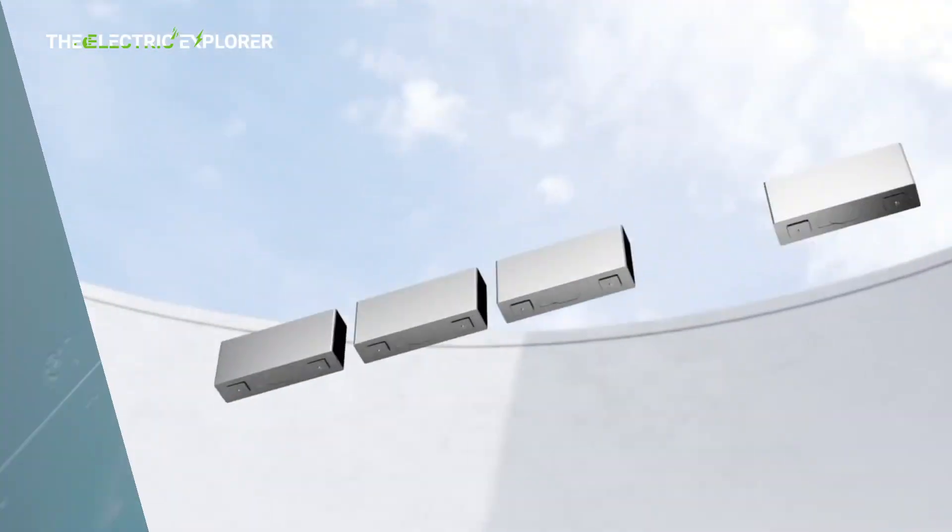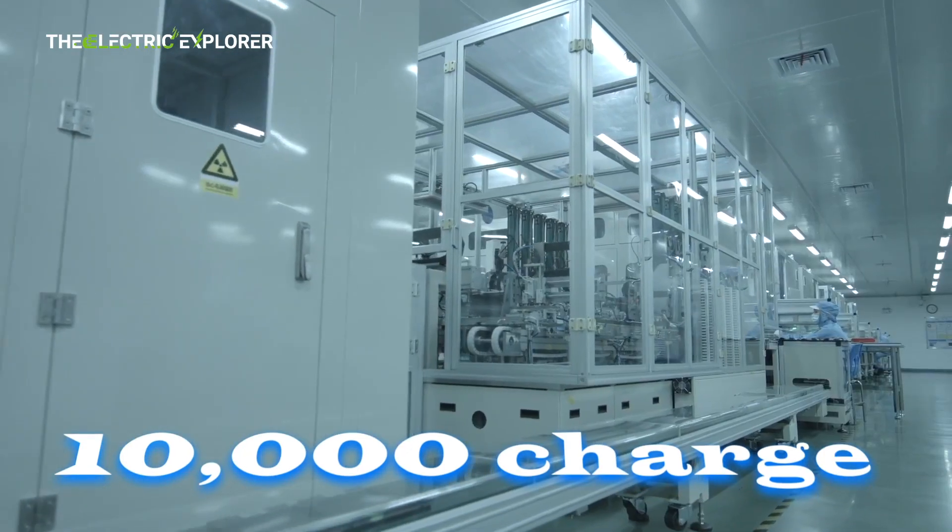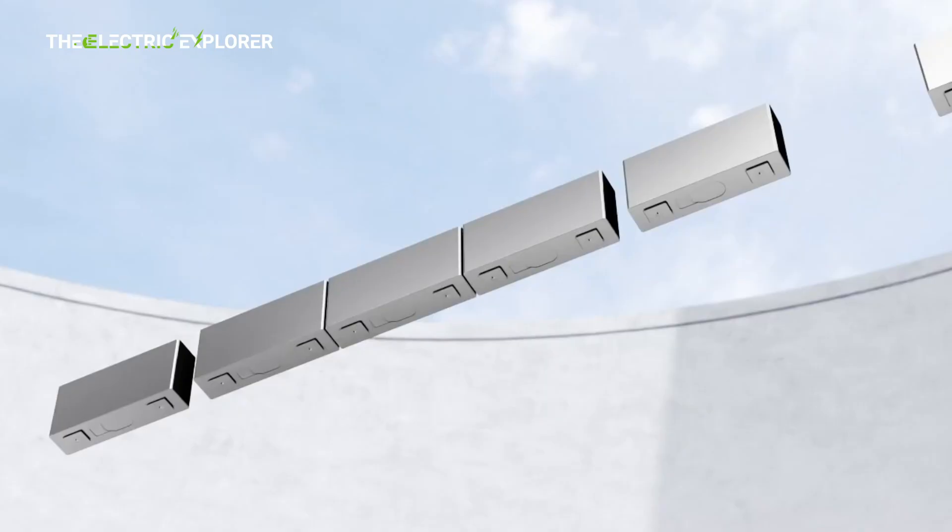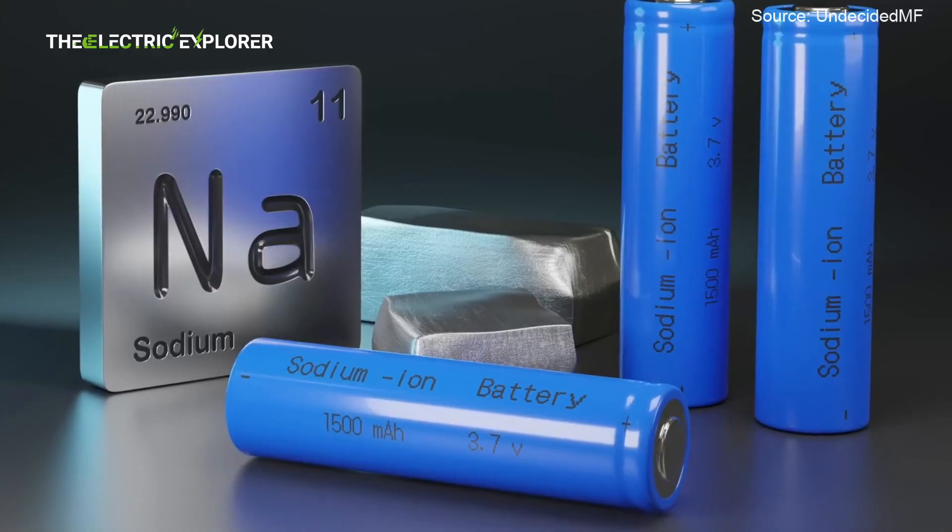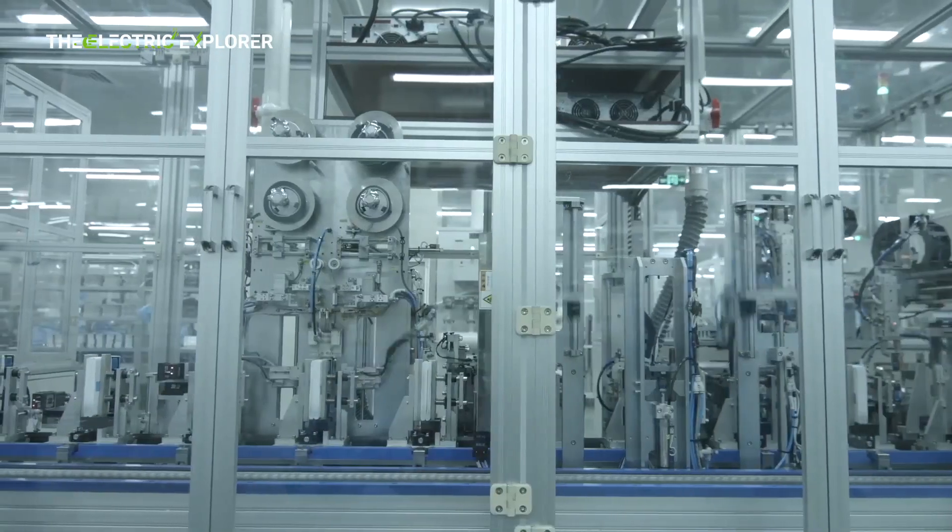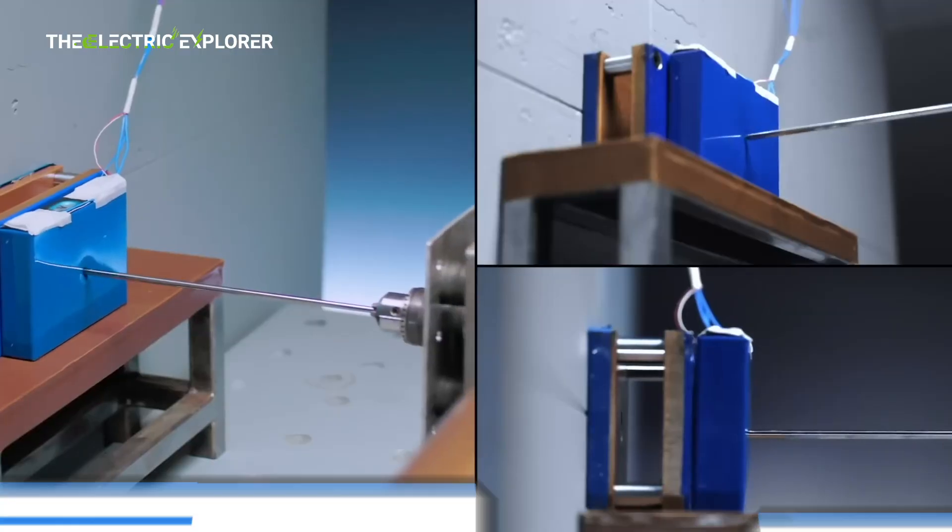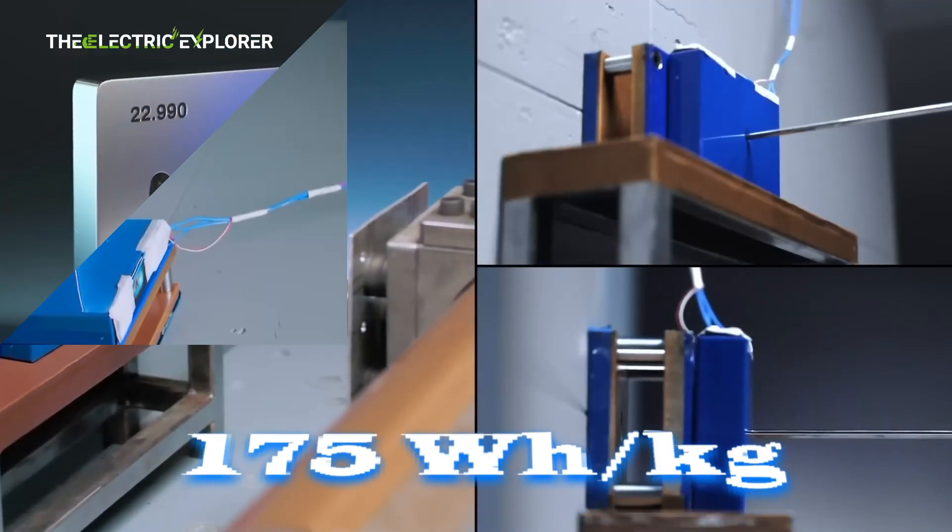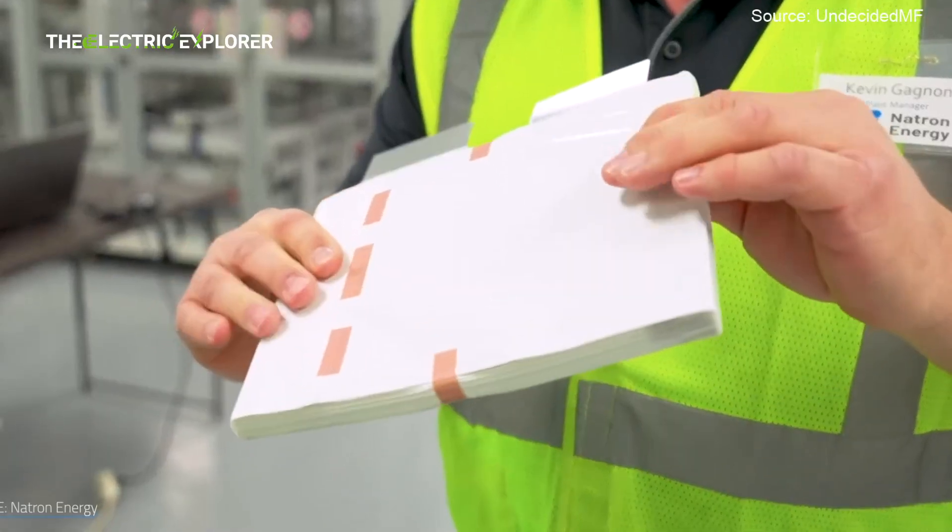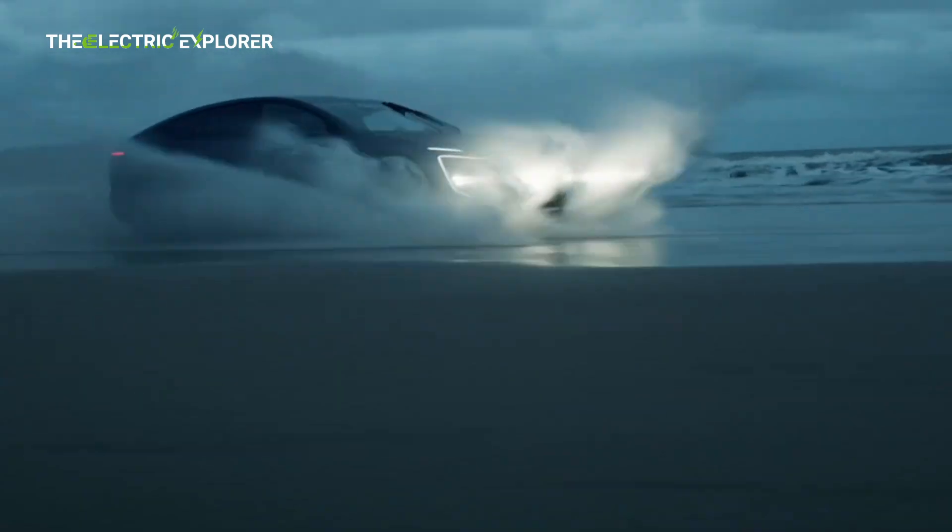CATL claims Naxtra can last for over 10,000 charge cycles, a figure that dwarfs the 3,000 to 4,000 cycles typical of today's lithium batteries. If true, this could extend a vehicle's lifespan to millions of miles, effectively making the battery infrastructure rather than a disposable component. With an energy density of 175 watt-hours per kilogram, Naxtra is competitive with mainstream lithium iron phosphate (LFP) batteries.